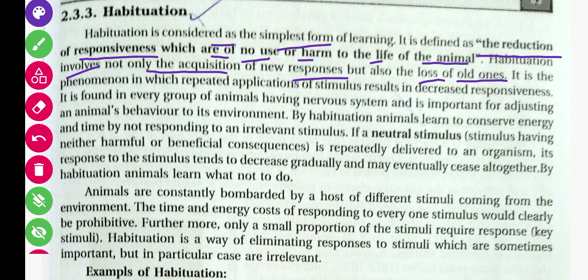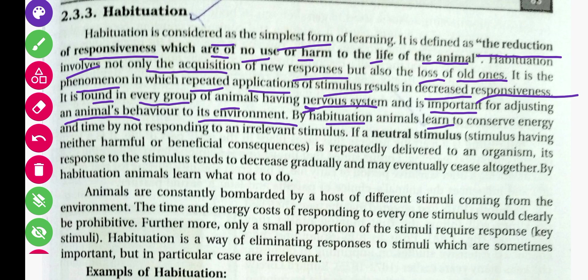It is the phenomenon in which repeated application of a stimulus results in a decrease in responsiveness. It is found in every group of animals having a nervous system and is important for adjusting an animal's behavior to its environment. By habituation, animals learn to conserve energy and time by not responding to an irrelevant stimulus.